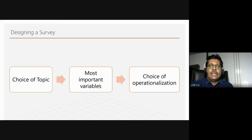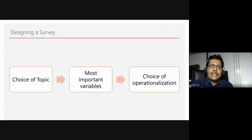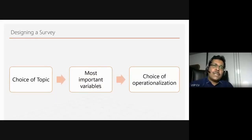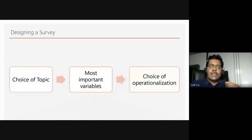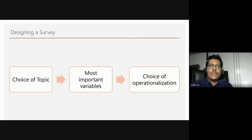Choice of operationalization is very important. Consider the question 'Do you like cricket?' — it might mean two different things to two different people. To one class of people it could mean 'do you like watching cricket on television?', and to another class it could mean 'do you like to play cricket?' The same question, how it is operationalized, depends on how we view our respondents. This choice of operationalization is a very important part of designing the survey instrument.